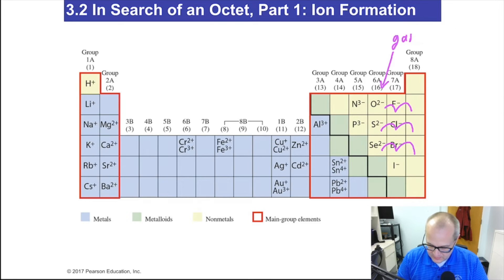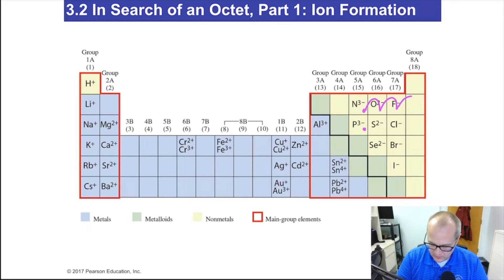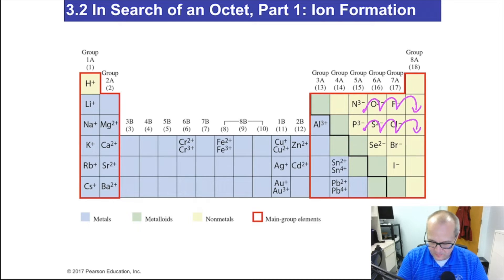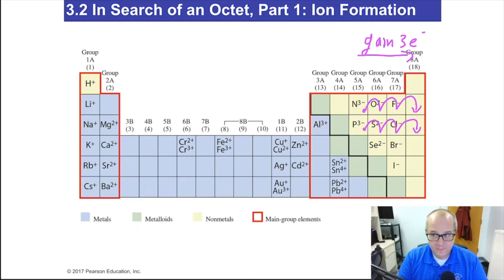Let's look at group 15. If you're in group 15, it takes one, two, three jumps to look like the nearest noble gas. So nonmetals in group 15 will gain three electrons, or become 3 negative. That's how you can use the periodic table to predict the charge on an atom when it becomes an ion.